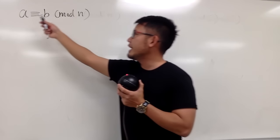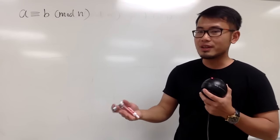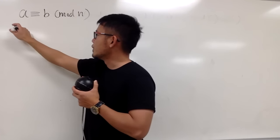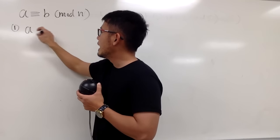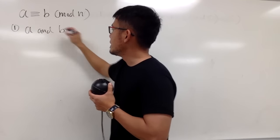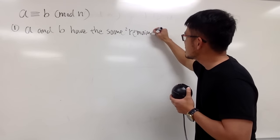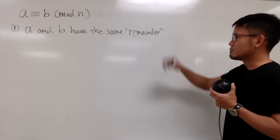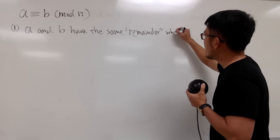When we have a is congruent to b mod n, all the following are pretty much equivalent, and depending on the situation you can interpret them differently. Perhaps the first thing I want to tell you is that when we have a is congruent to b mod n, this means that a and b have the same remainder—and I'll put quotation marks for the word "remainder" because sometimes when we're talking about this kind of thing, you may end up with negative remainders and things like that. So that's pretty much the idea; that's why I put down quotation marks.